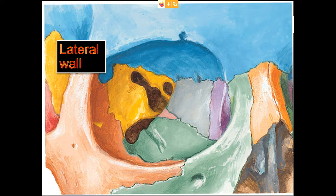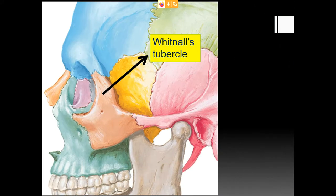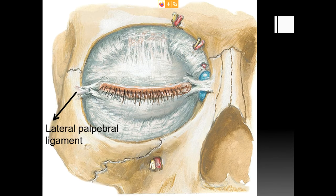The lateral wall is formed anteriorly by the zygomatic bone and posteriorly by the greater wing of the sphenoid bone. On the zygomatic bone we can identify a tubercle called Whitnall's tubercle, which gives attachment to the lateral palpebral ligament. There is also a zygomatico-temporal foramen, which transmits the zygomatico-temporal nerve. The lateral palpebral ligament fuses with this lateral orbital tubercle and gives attachment to the palpebral part of the orbicularis oculi muscle.